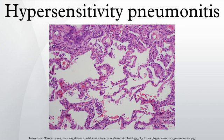Acute HP is characterized by poorly formed non-caseating interstitial granulomas and mononuclear infiltration in a peribronchial distribution with prominent giant cells. On chest radiographs, a diffuse micronodular interstitial pattern may be observed, with findings normal in approximately 10% of patients. In high resolution CT scans, ground glass opacities or diffusely increased radio densities are present. Pulmonary function tests show reduced diffusion capacity of lungs for carbon monoxide. Many patients have hypoxemia at rest, and all patients desaturate with exercise.